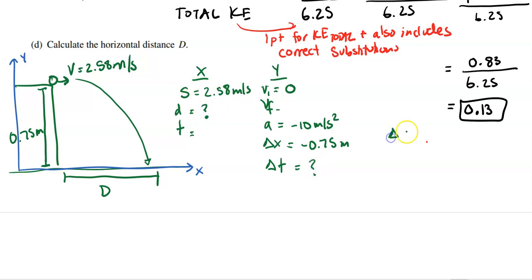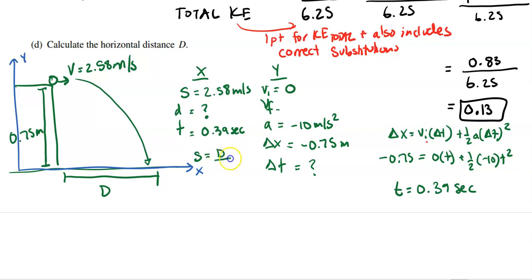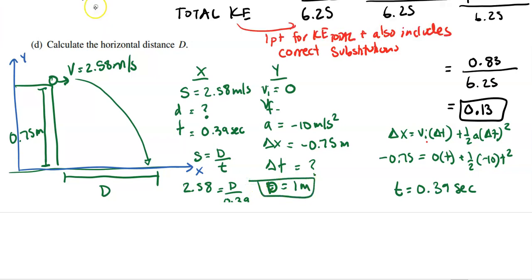Using Δx = v_i·Δt + ½a·Δt², I plug in: −0.75 = 0·t + ½(−10)t². Solving that gives t = 0.39 seconds. Then using speed = distance/time: 2.58 = d / 0.39, so the horizontal distance d equals 1.0 meter.